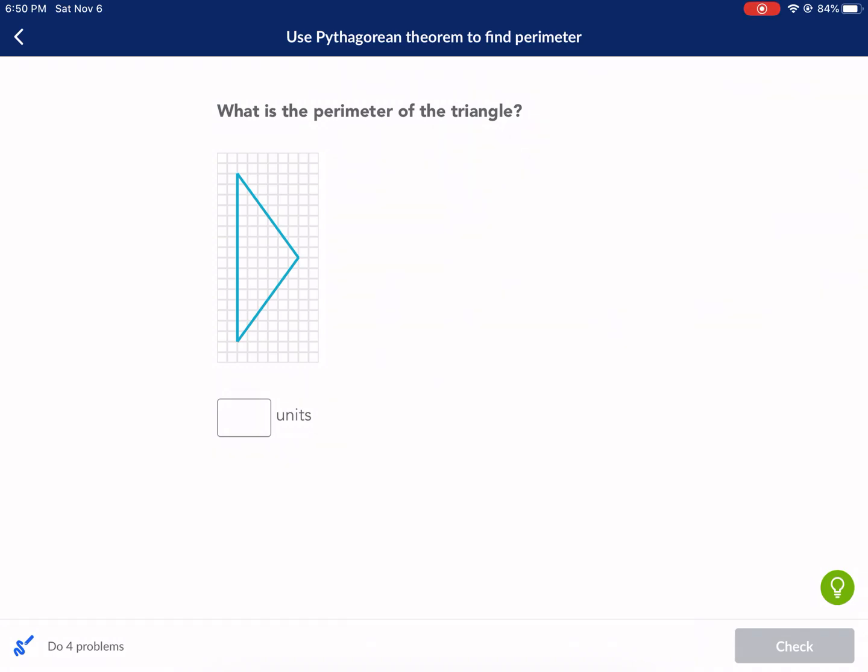Hi everyone, welcome to Wes Explains Best. Today we're doing a requested Khan Academy: use Pythagorean theorem to find perimeter. I received a comment from Just Noco who needed help with this one. So this video is for you. Thanks for leaving a comment.